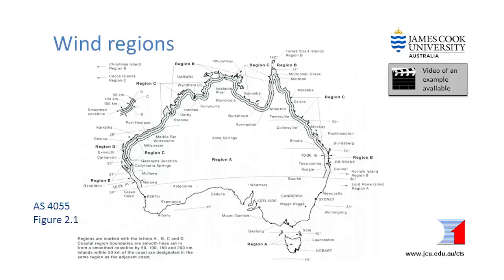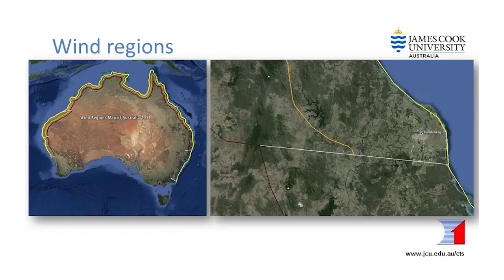Strong winds can occur in any part of Australia. The map in AS4055 shows four wind regions for the whole country. The first step is to determine which wind region the town is in. Where a wind region boundary passes close to or through a town, the cyclone testing station recommends using the higher wind region for that area. For example, the Bundaberg area is close to the boundary between wind regions B and C, so all houses in or near Bundaberg should be considered to be in wind region C.